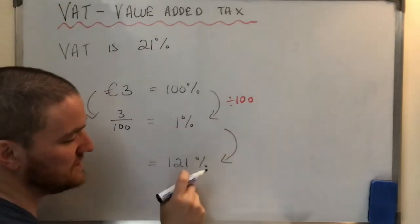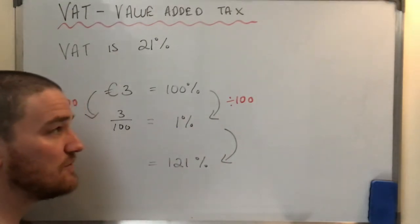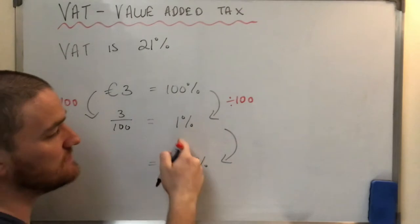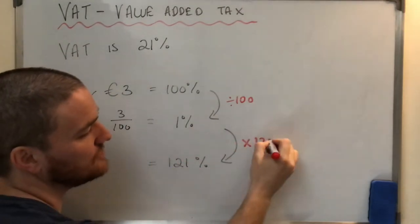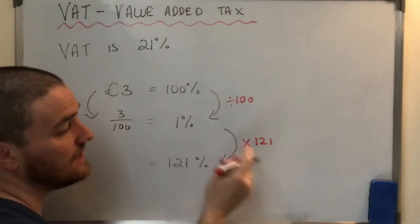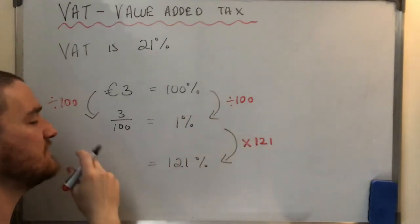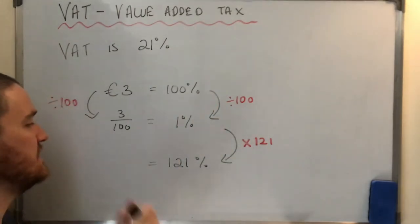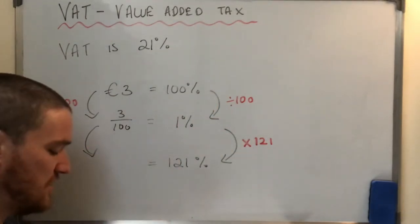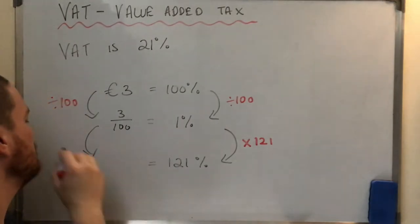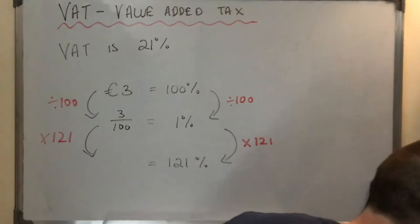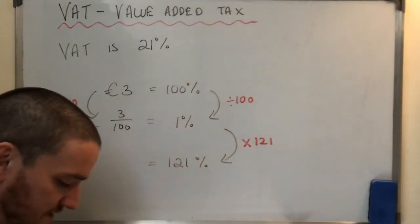Okay, so if I do that on the right hand side of the equals, I also need to do it on the left hand side. So I'm going to here divide €3 by 100. And that will give me, you can put in your calculator if you want, but I'm just going to say 3 over 100. Okay, I'm not even going to put it in my calculator yet. Next, how do I get from 1% to 121%?